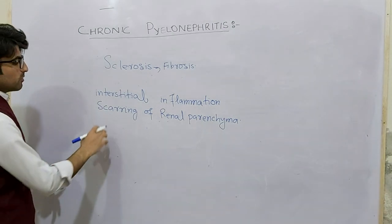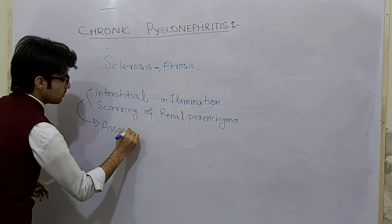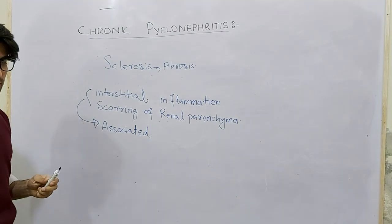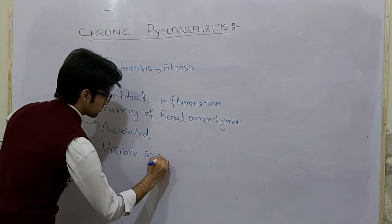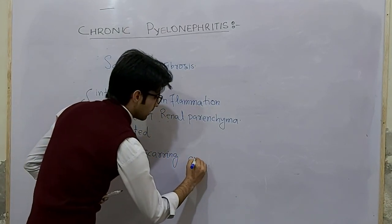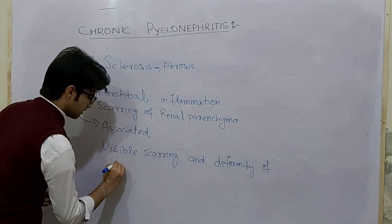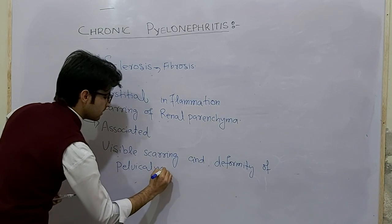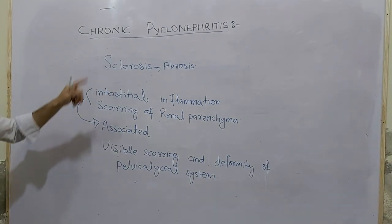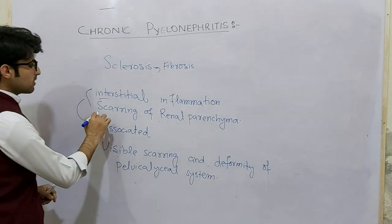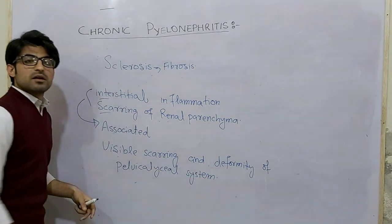As a result of the healing process we will find scarring of the renal parenchyma. Associated with these two conditions we will find deformity of the pelvic caliceal system. These two are the main characteristics of chronic pyelonephritis: interstitial inflammation and scarring of the renal parenchyma, with associated visible scarring and deformity of the pelvic caliceal system.